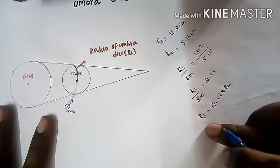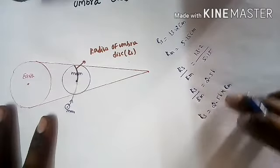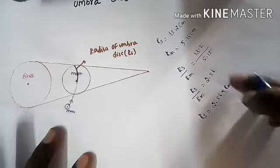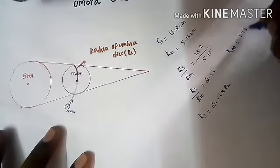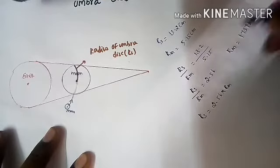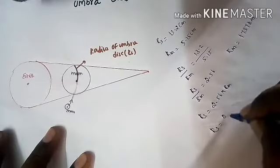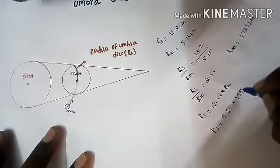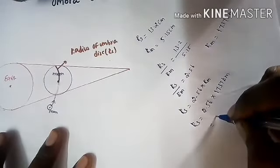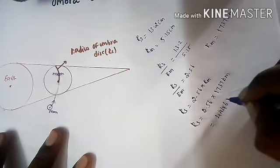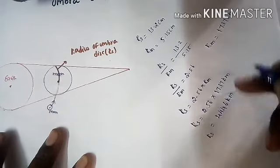So now, to calculate the radius of the Earth's umbra shadow, rs equals 2.56 times rm. This means the radius of the Earth's umbra shadow is equal to 2.56 times the radius of the moon. The radius of the moon is rm = 1,737 km. Applying these values, rs equals 2.56 × 1,737 km, giving a result of 4,446 km. So this is the radius of the Earth's umbra shadow.